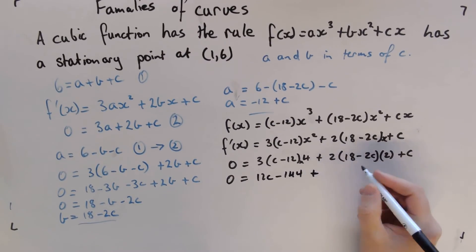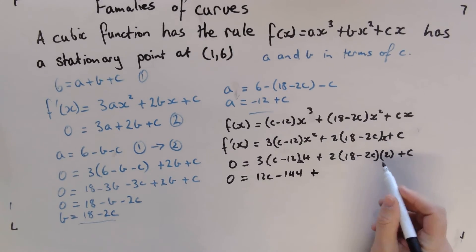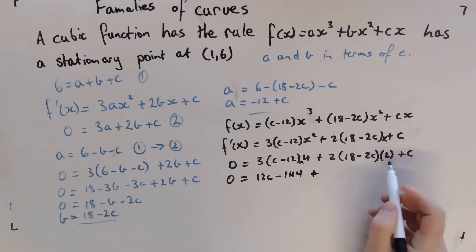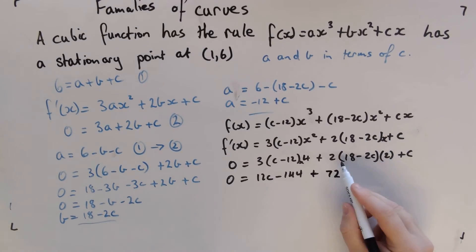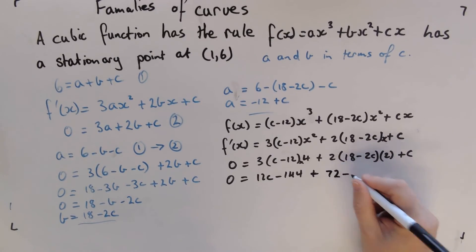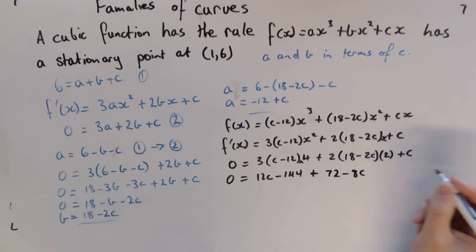Plus we're going to have, we're going to have 36 times 2 is 72, and we're going to have -8, -8c + c.